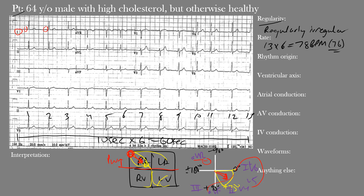Looking at the EKG: lead I shows upright P waves, lead II shows upright P waves, AVF shows upright P waves in those inferior leads. Moving to the left lateral precordial leads — V4, V5, and V6 all show upright P waves. And in AVR we can see inverted P waves. Additionally, for sinus rhythm we need a P wave before each QRS with a one-to-one ratio. Looking through the rhythm strip, there is always a P wave before each QRS complex, so we meet all the criteria for sinus rhythm.